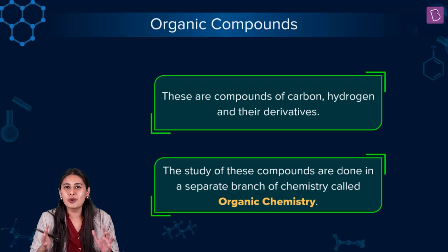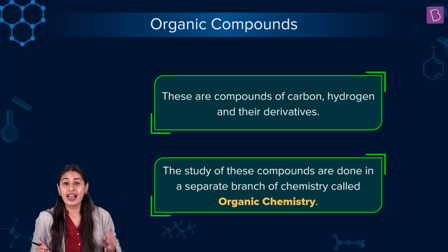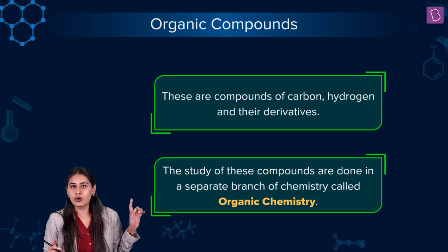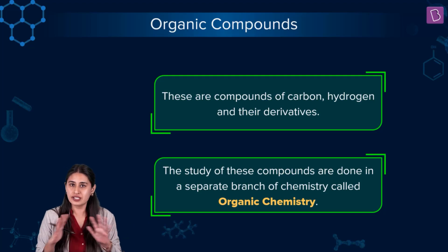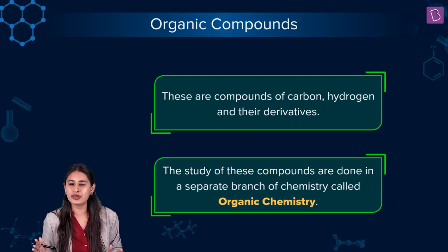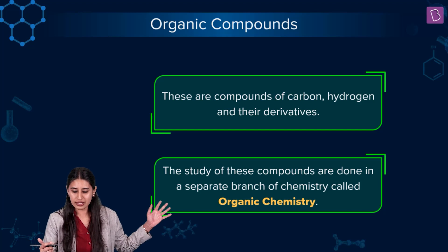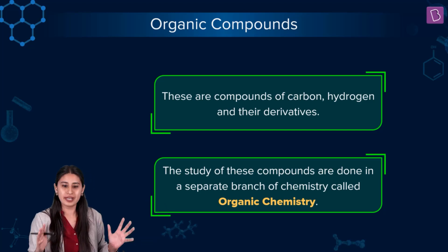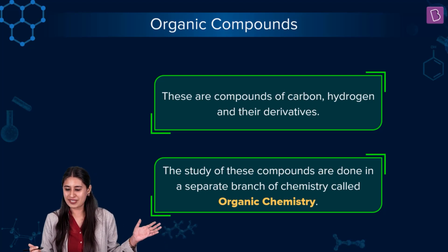Carbon is the soul of organic chemistry. Carbon along with hydrogen and its derivatives — this is the modern definition of organic chemistry: the study of carbon, hydrogen, and their derivatives. The study of these compounds is done in a separate branch of chemistry called organic chemistry.